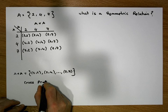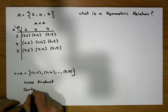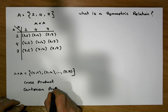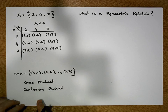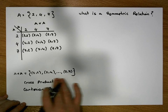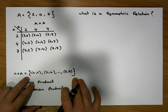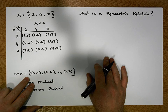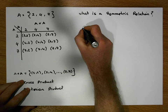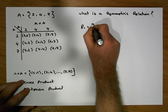Or the Cartesian product. And what we're free to do is choose particular subsets of this cross product, and by definition those subsets are what we call relations. So for example, I might choose R1 to contain the values: